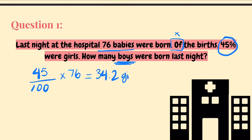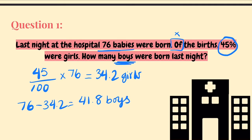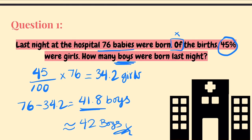34.2 is the amount of girls. Now to find the amount of boys, we subtract from the total: 76 minus 34.2 gives 41.8 boys. Obviously there can't be 41.8 boys, so you will just have to round it. They will probably ask you to round it, which will be closer to 42 boys — that is your answer. Very straightforward question; you just need to understand how percentages work.